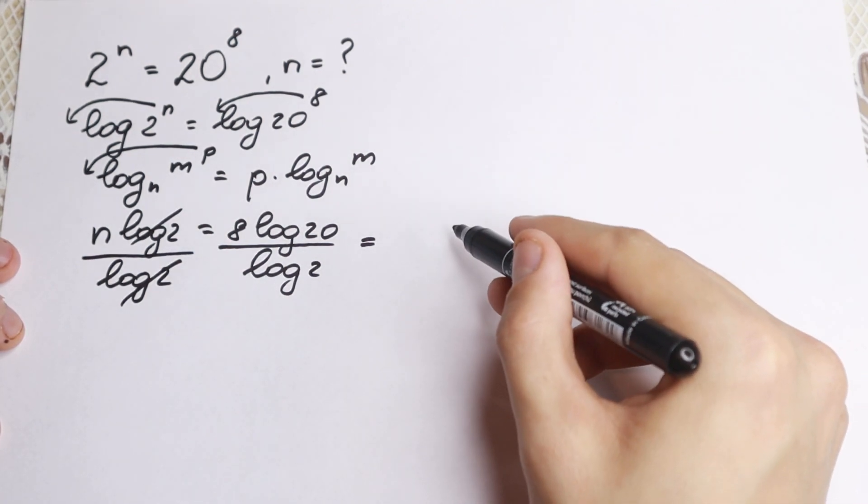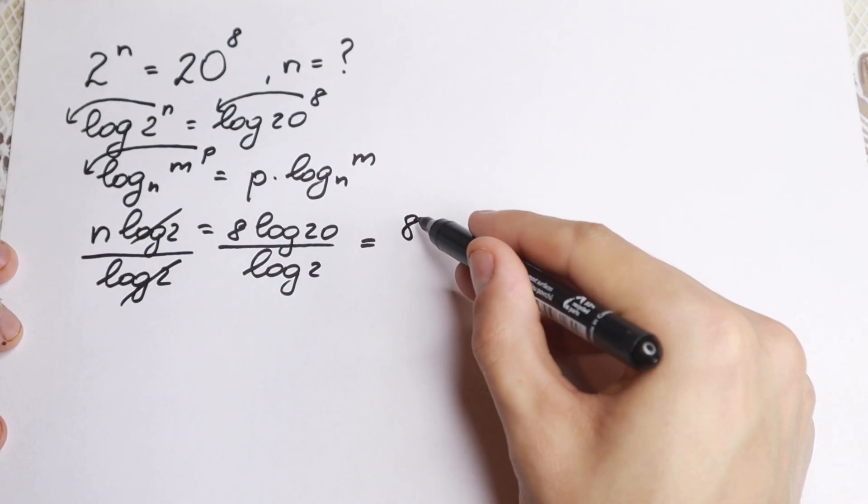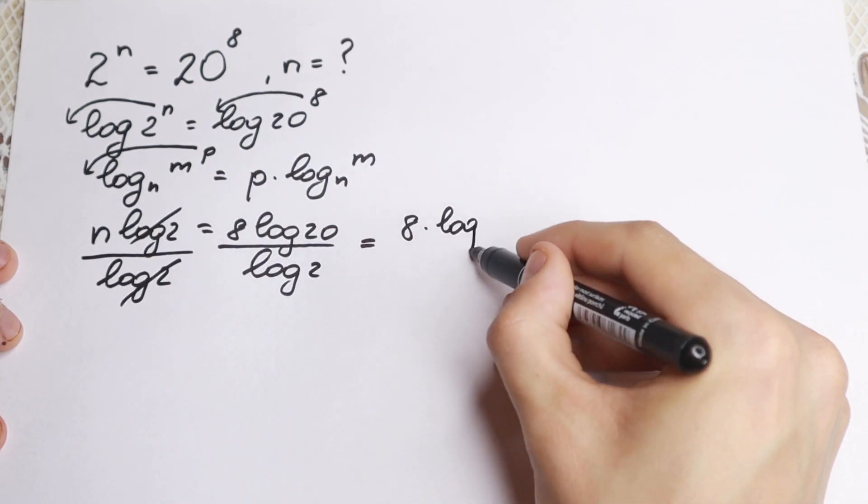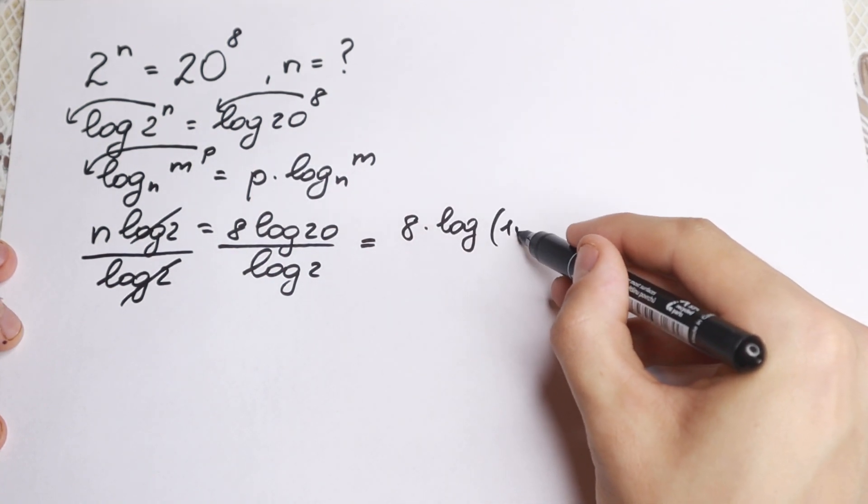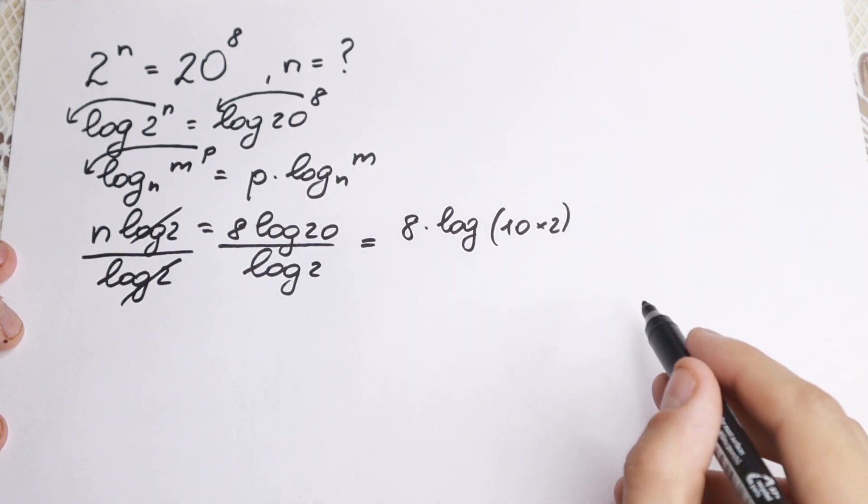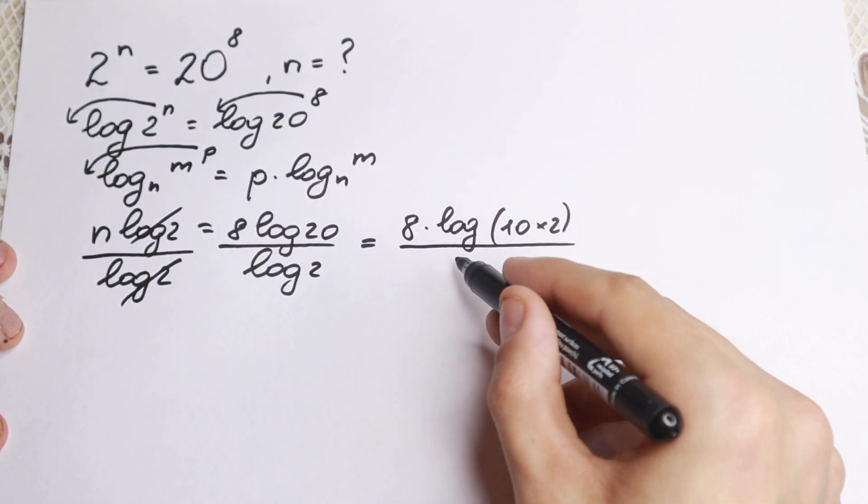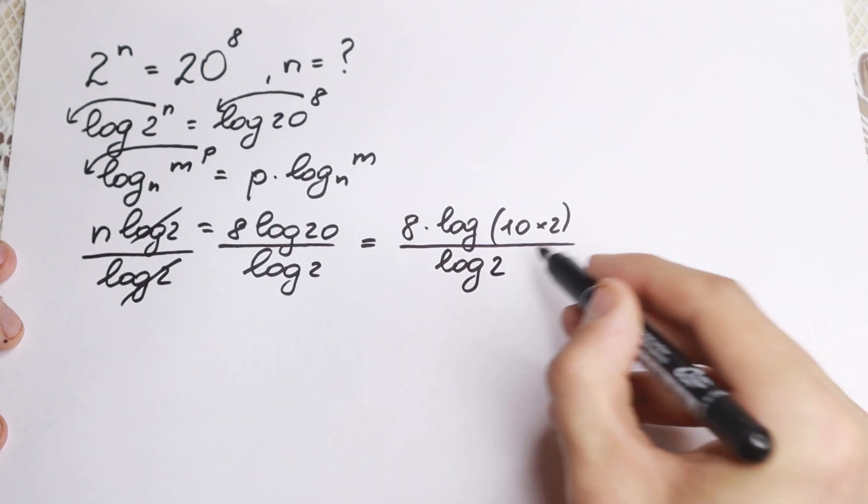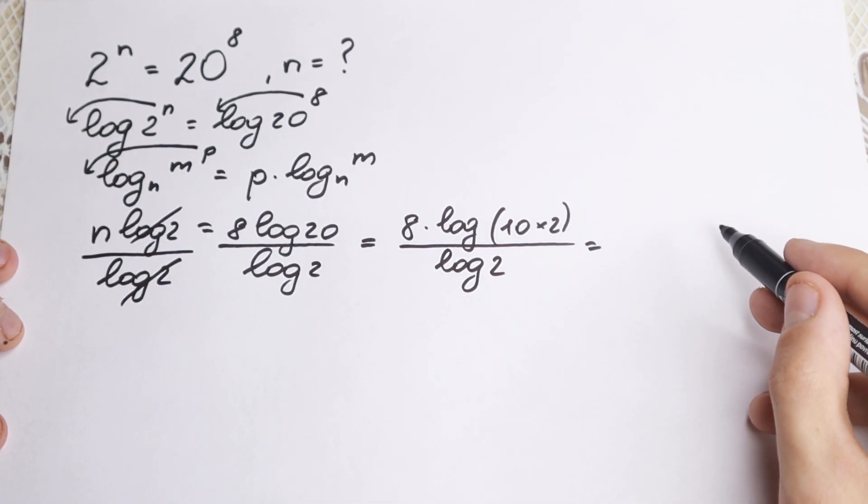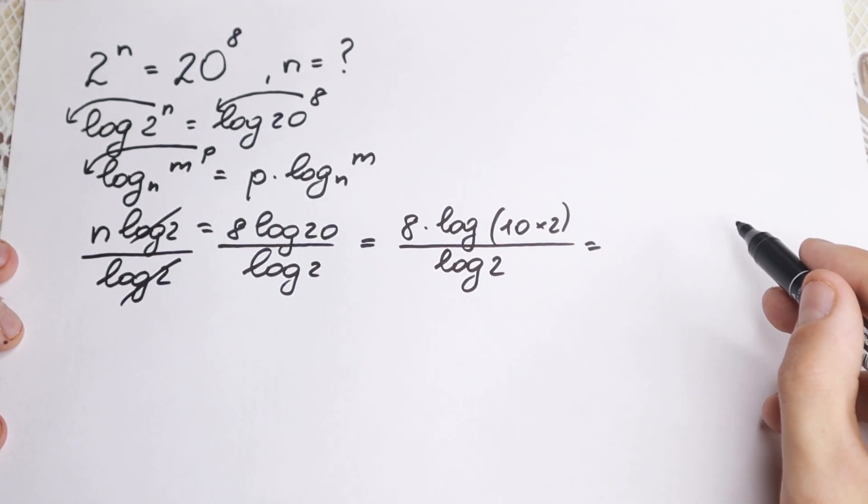First of all let's write this 20 as 2 times 10, so we have 8 times logarithm, right here we have 10 times 2. Okay, we just write this 20 as 10 times 2 and log 2 in our denominator. And right now we need to know a really good property.